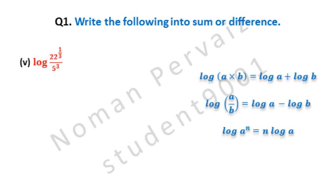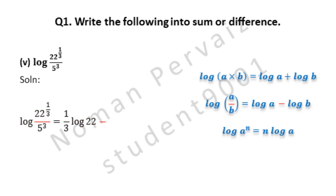Next, part 5 of question number 1, exercise 3.3: write the following into sum or difference. Part 5 is log(22^(1/3) / 5^3). Both second and third properties will be applied because this question involves power as well as division. Applying the third property, power comes first: (1/3)·log 22. Then the second property converts division to minus. Then the third property is applied again: 3·log 5. Hence, this is our answer: (1/3)·log 22 − 3·log 5.